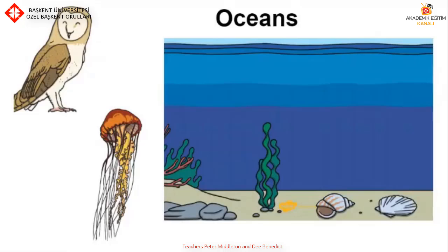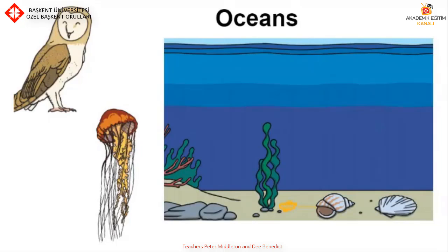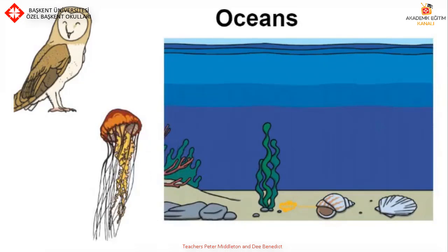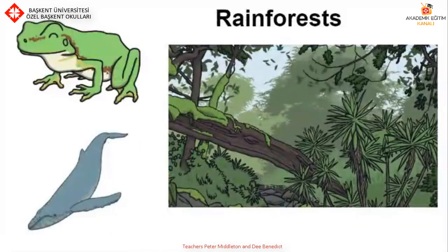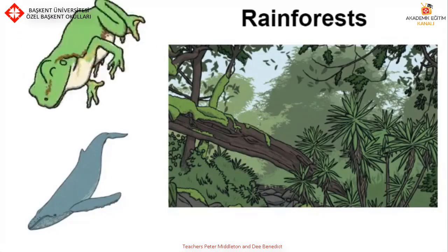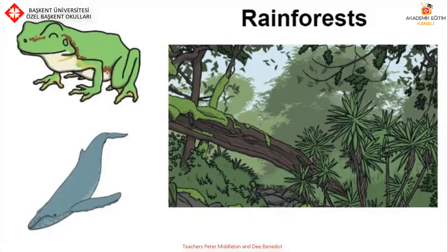Here is an ocean and there's an owl and a jellyfish. Which animal lives in the ocean? That's right, it's a jellyfish. What does it eat? And where does the owl live? There's a rainforest with a frog and a blue whale. Which one lives in the rainforest? That's right, it's a frog. A frog lives in the rainforest. Where does the blue whale live?